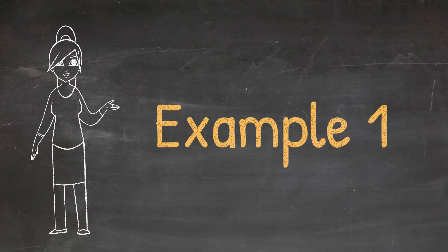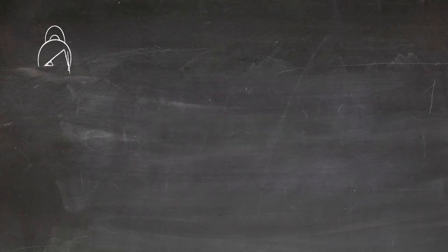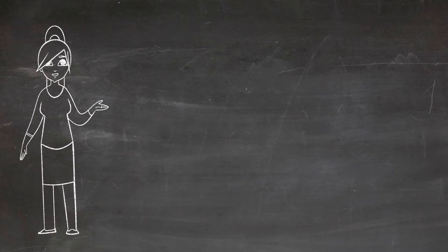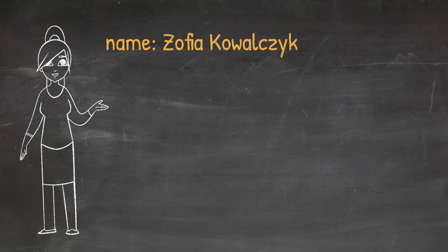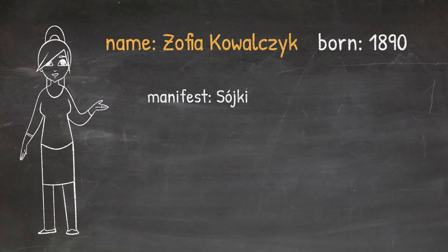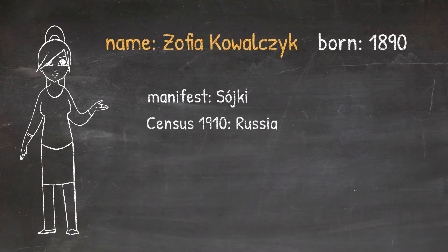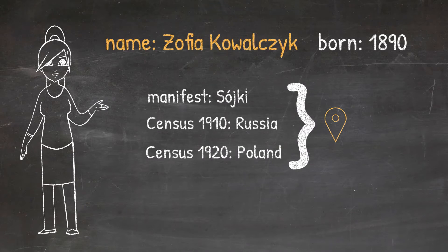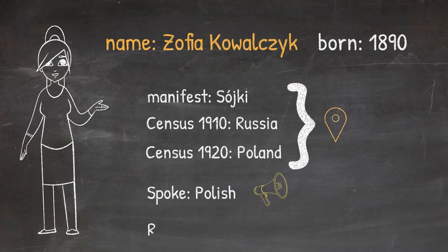Let's explain the LLR formula and registration location concept based on an example. We will try to locate the registration location for the birth record of Zofia Kowalczyk, born in 1890. In our example, we know the place she was born is called Suiki, as indicated on the manifest. From the 1910 census she declared she came from Russia, and from the 1920 census she declared to be born in Poland — that's the first L. She spoke Polish — the second L — and she was Catholic — that's the R.